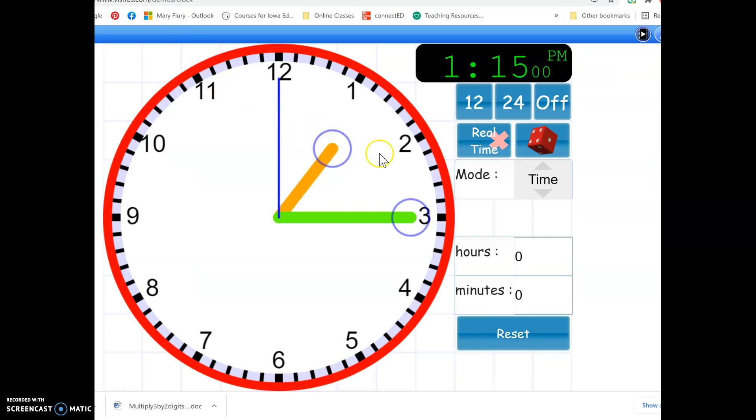Now here's the hour hand, the orange one. You can tell that it's not pointing directly at the one anymore, it's just a little bit past the one. Every time the minute hand moves one minute, that hour hand moves a little bit also.